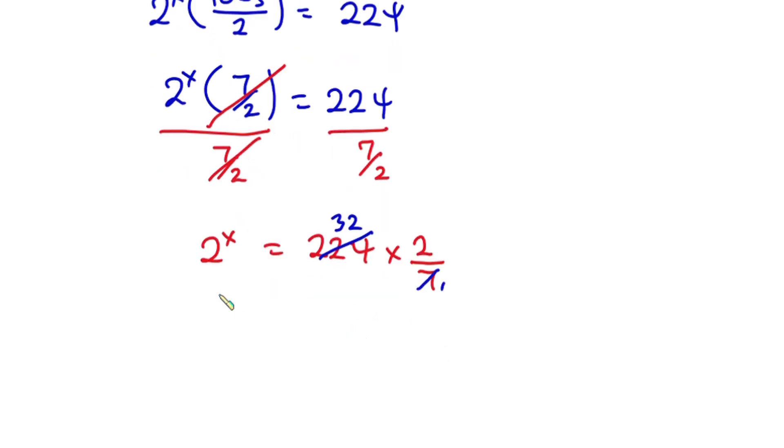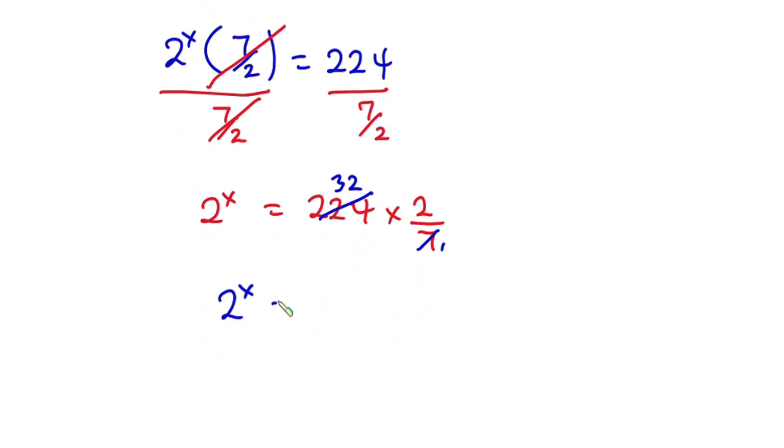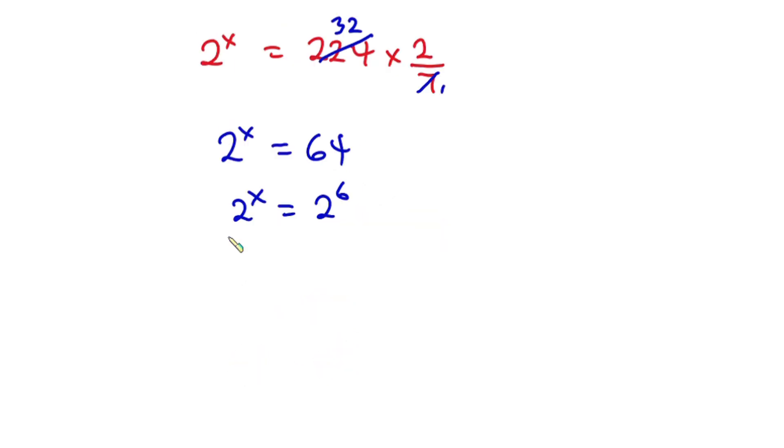So we are left with 2 to the power x is equal to 32 times 2, which is 64. And we can write 64 as 2 to the power 6. Now we can see that the bases are the same, so this implies that x is equal to 6, and guess what, this is our final answer.